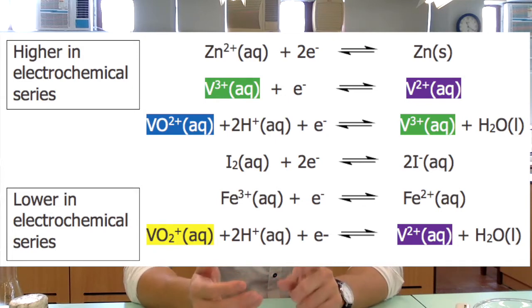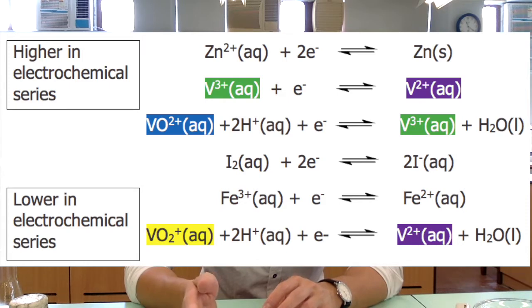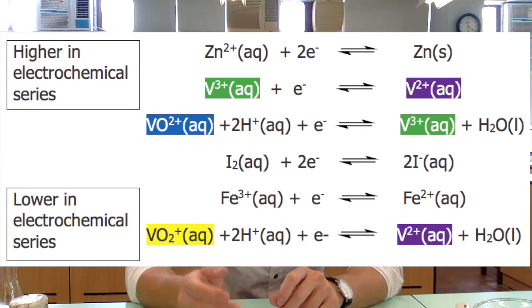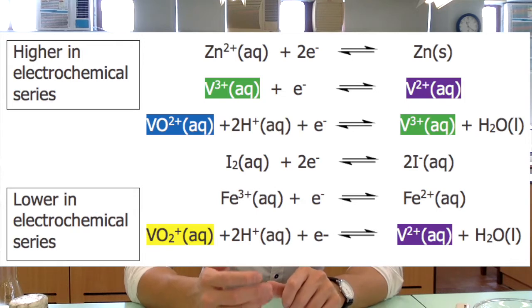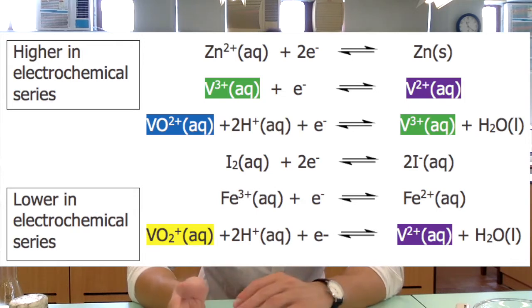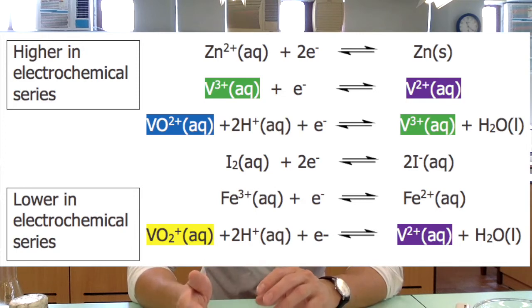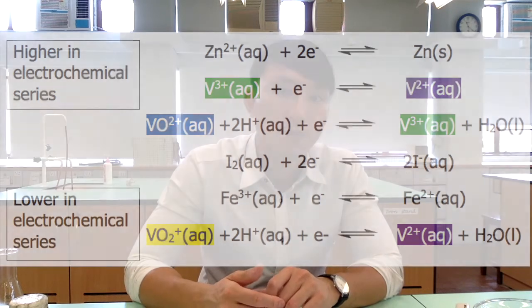When we react zinc with dioxo-vanadium(5) ion, you would expect the reaction to produce V2+ as the final product. However, if we carefully adjust the quantity of zinc added, it is possible to reduce the dioxo-vanadium(5) ion in a step-wise manner — first into oxo-vanadium(4), then vanadium(3), and lastly vanadium(2) — observing the color of each species.